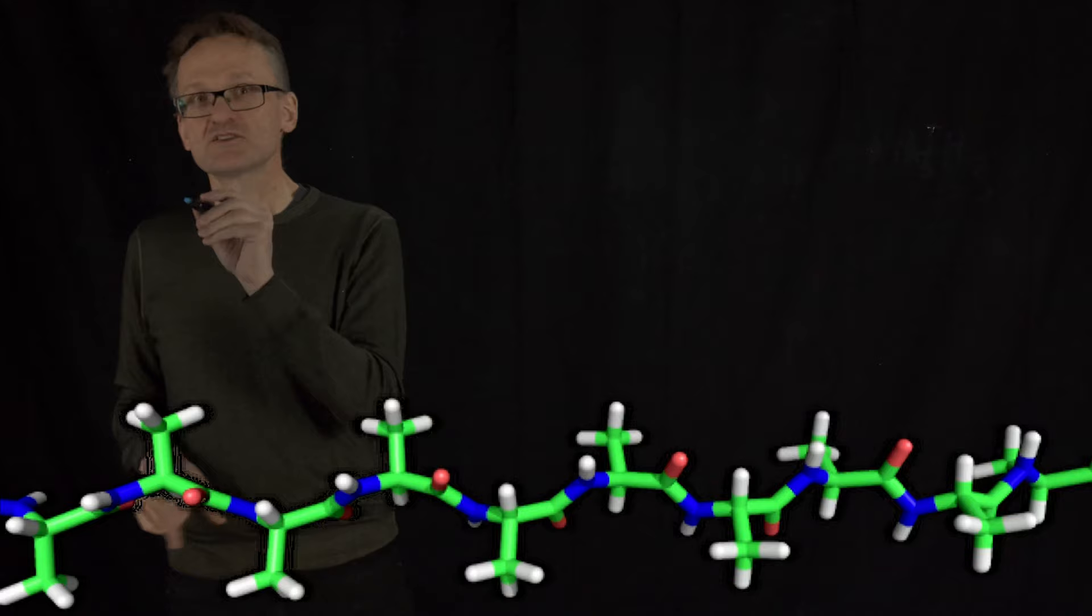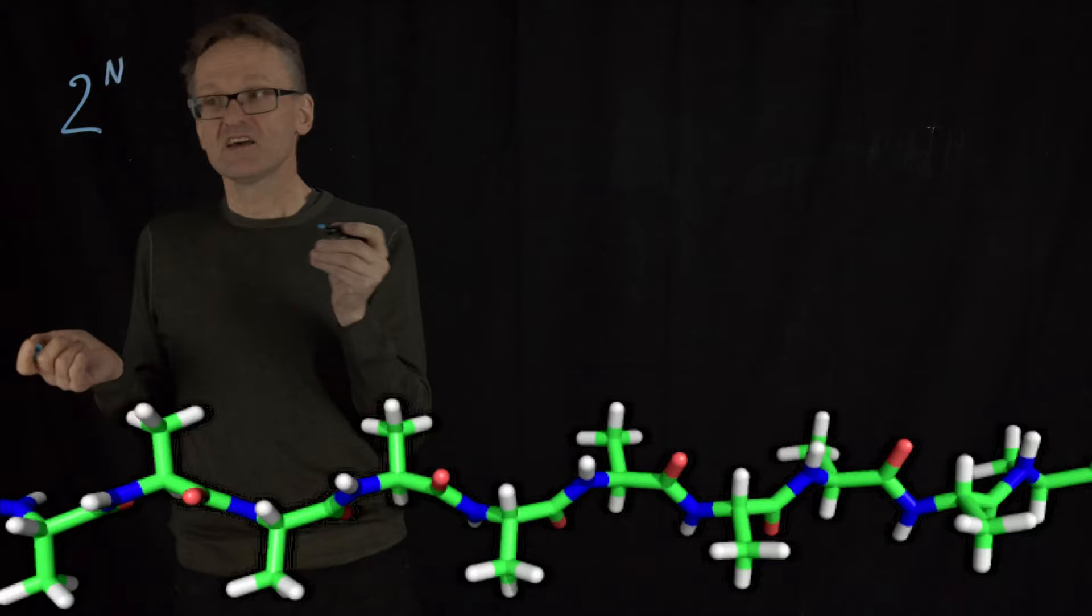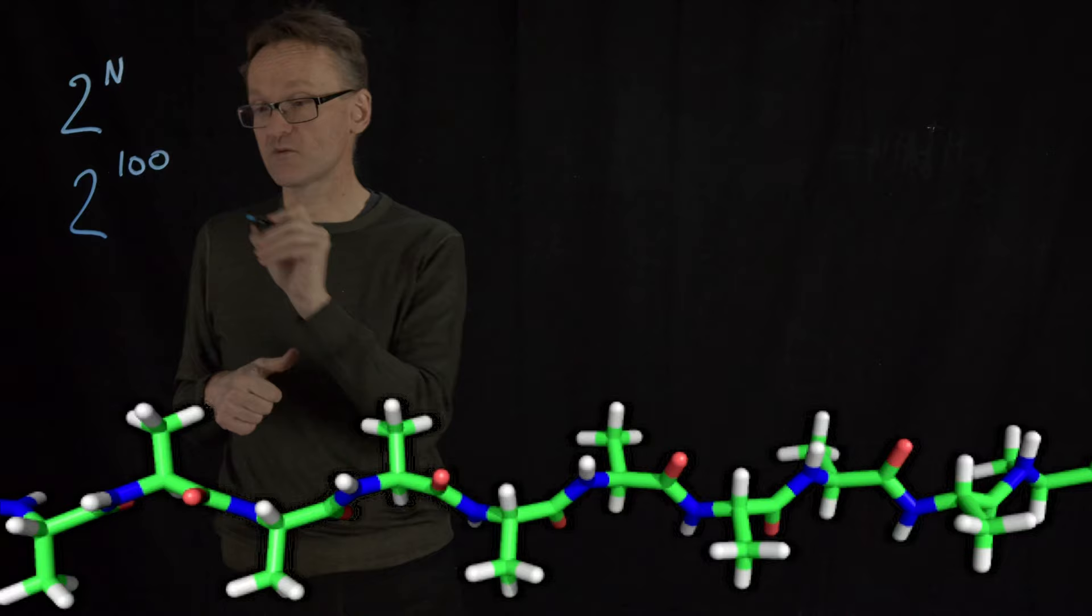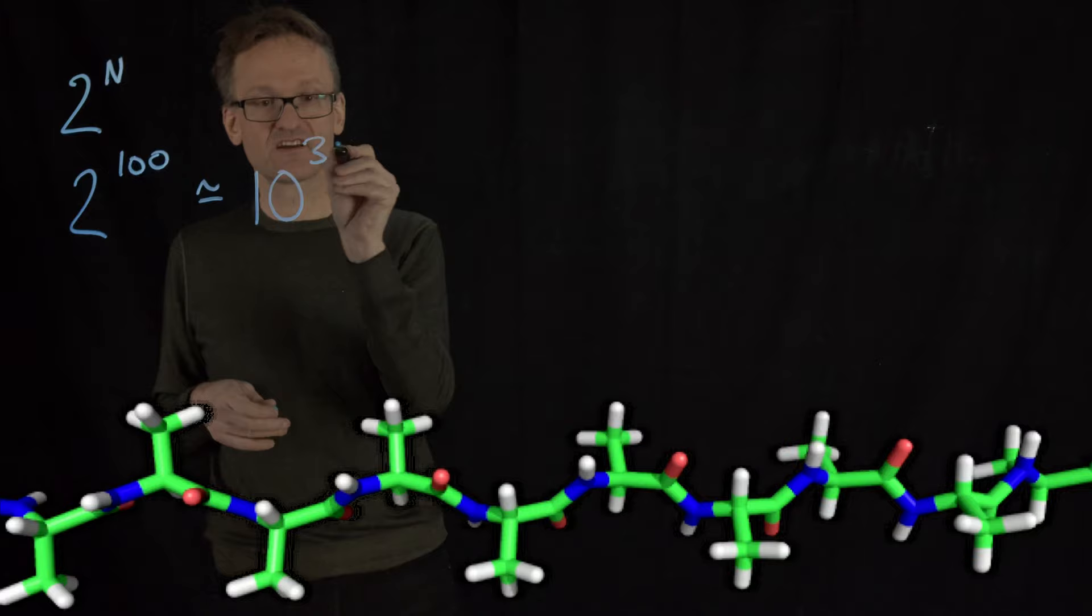So if I have two states per residue and then I have n residues, well that means if I have 100 residues, remember those were among the smallest proteins I had in that table. That's going to be 2 to the power of 100 different combinations and that's roughly 10 to the power of 30, which is around the largest number you can represent in single precision.